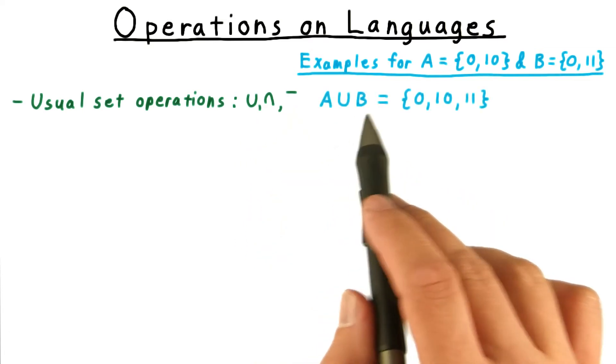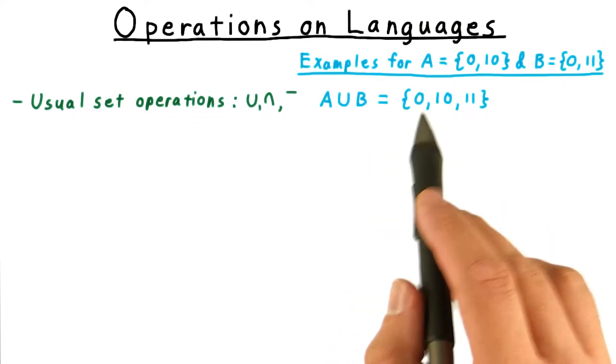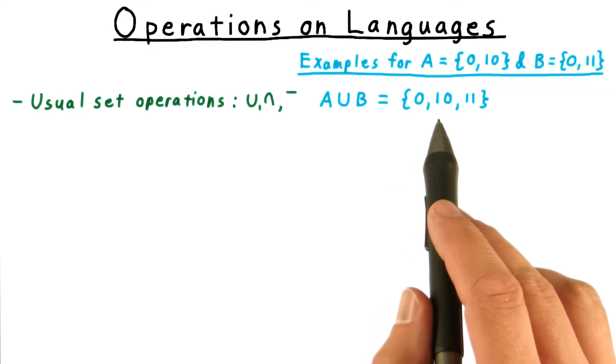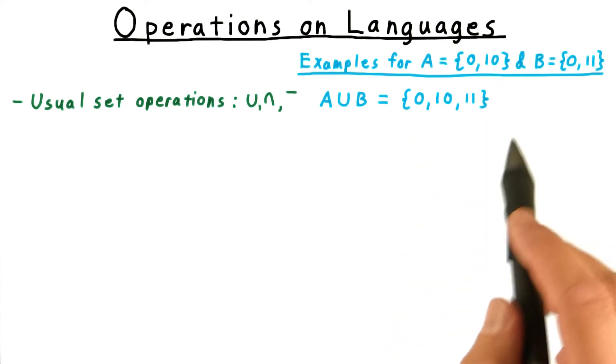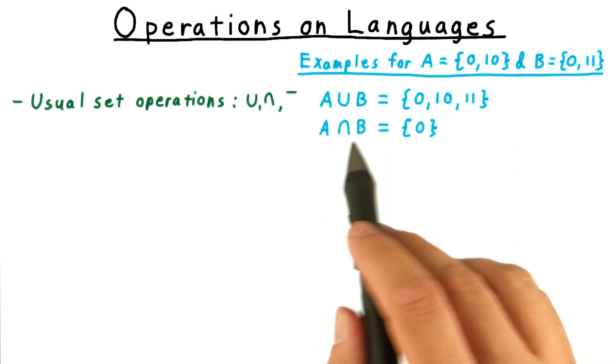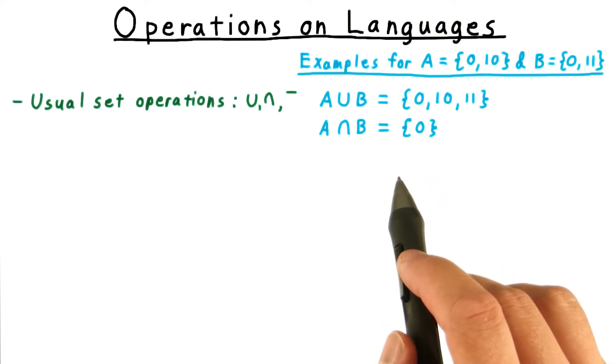For example, A union B consists of these three strings: 0 from both A and B, 10 from A, and 11 from B. The intersection contains only those strings in both languages, just the string 0 here.